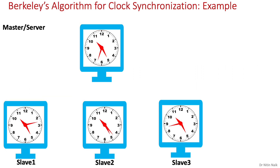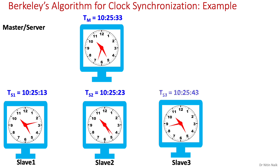Now let's look at an example. We have three slaves with one master and their clocks are non-faulty, where master's time TM equals 10 hours 25 minutes and 33 seconds, first slave's time TS1 equals 10 hours 25 minutes and 13 seconds, and second slave's time TS2 equals 10 hours 25 minutes and 23 seconds. Note that the time format used here is hours, minutes, and seconds; milliseconds are excluded for simplicity.